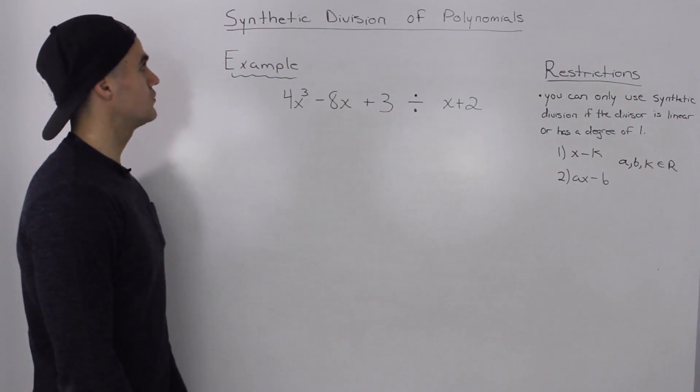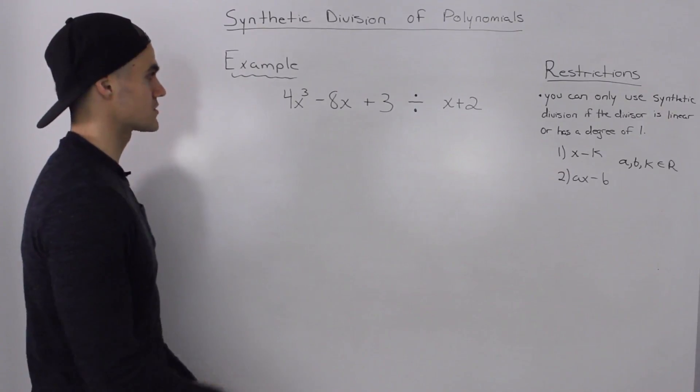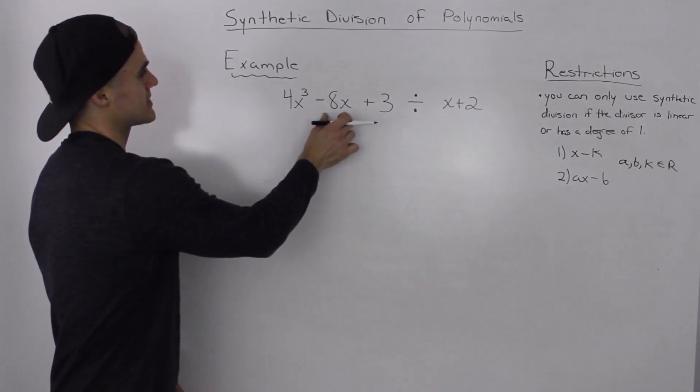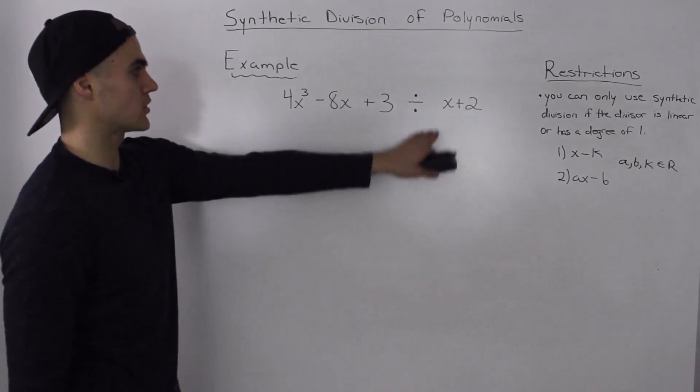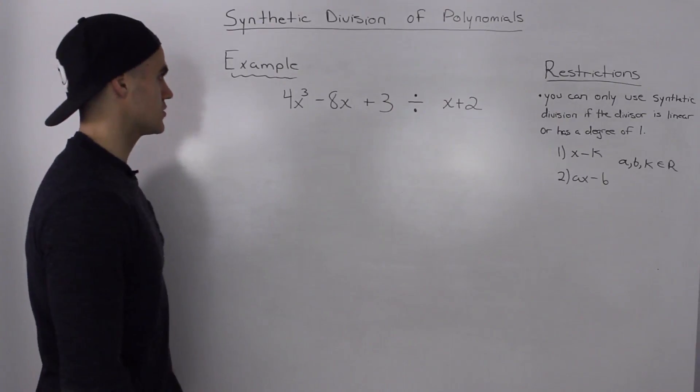Yo, what's up guys? So moving on to the next example for the synthetic division of polynomials. We got 4x³ minus 8x plus 3 and we're dividing it by x plus 2.